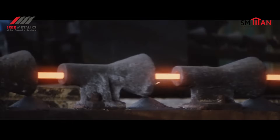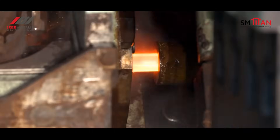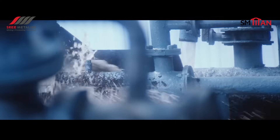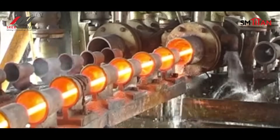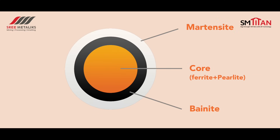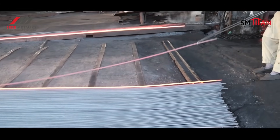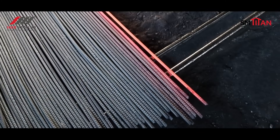We employ the German patented Thermax cooling process, a state-of-the-art method that enhances the microstructure of TMT bars. During Thermax quenching, the TMT bars undergo rapid cooling, resulting in a unique microstructure. The process forms a tough outer layer called martensite, which provides excellent hardness, while the inner core remains ductile and flexible due to bainite formation. This combination of martensite and bainite gives TMT bars their exceptional properties.